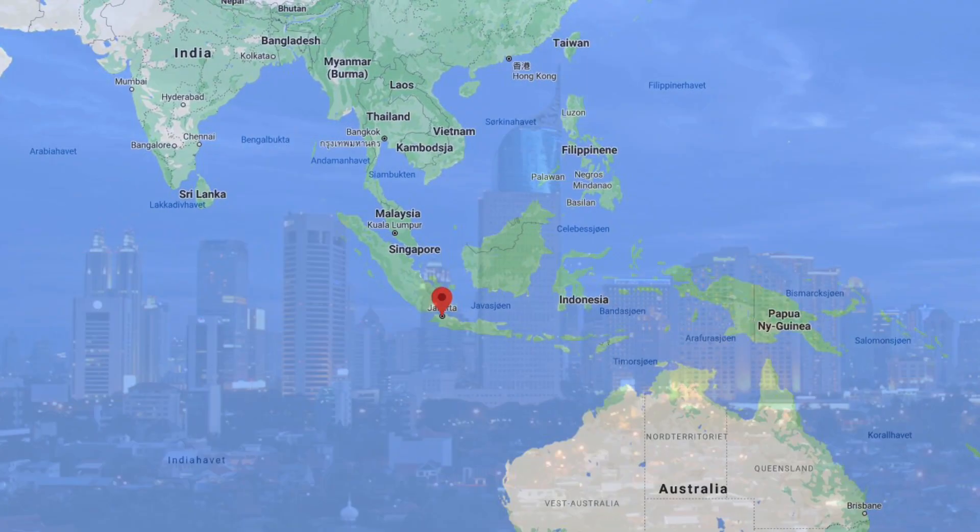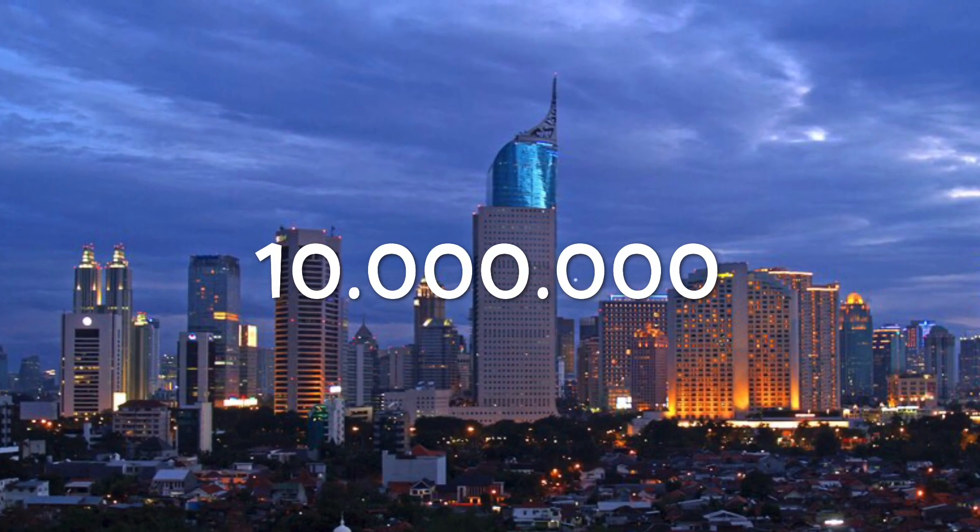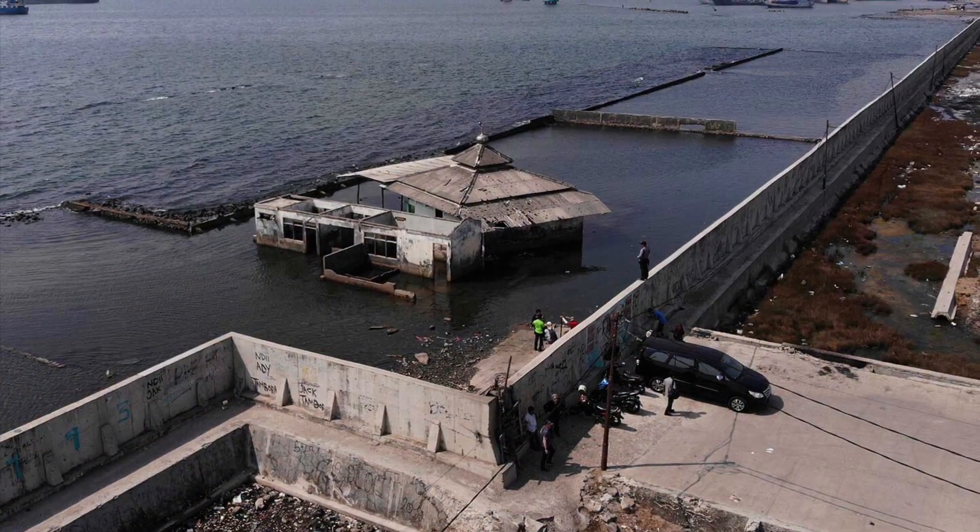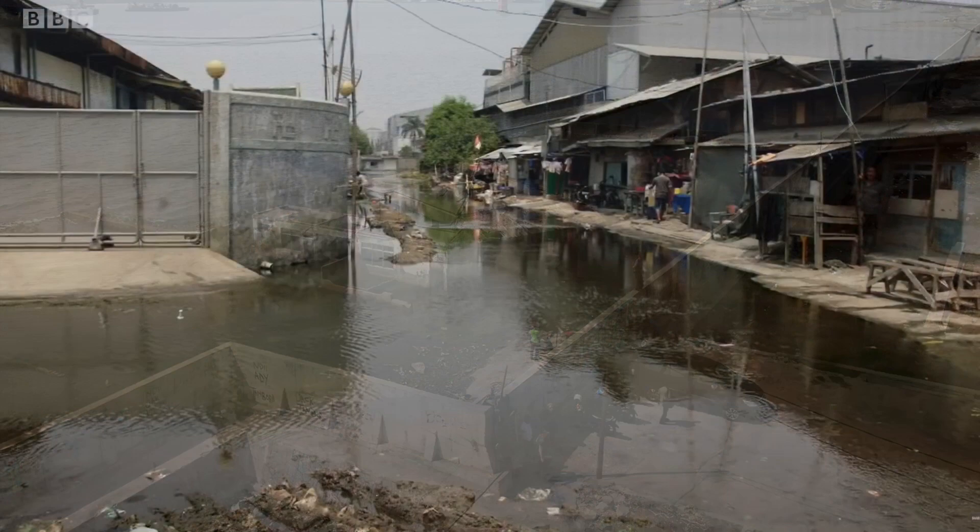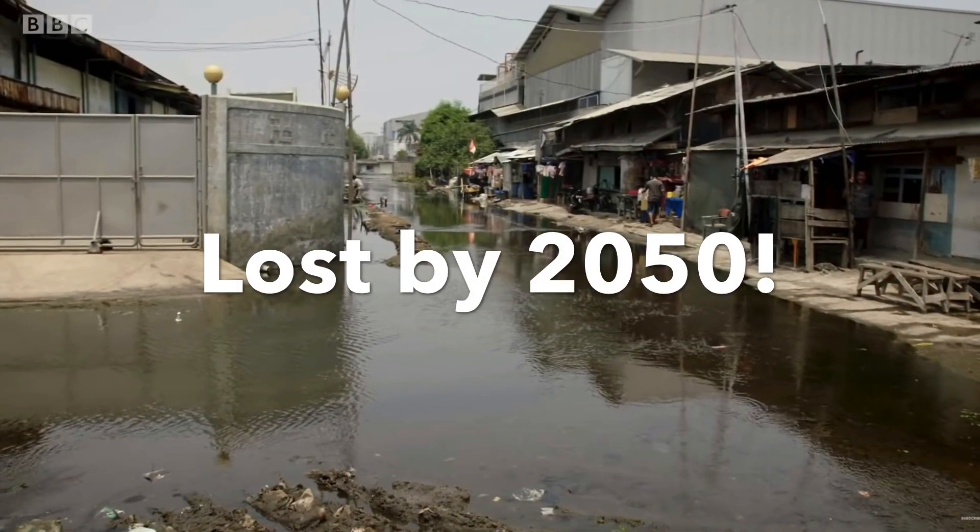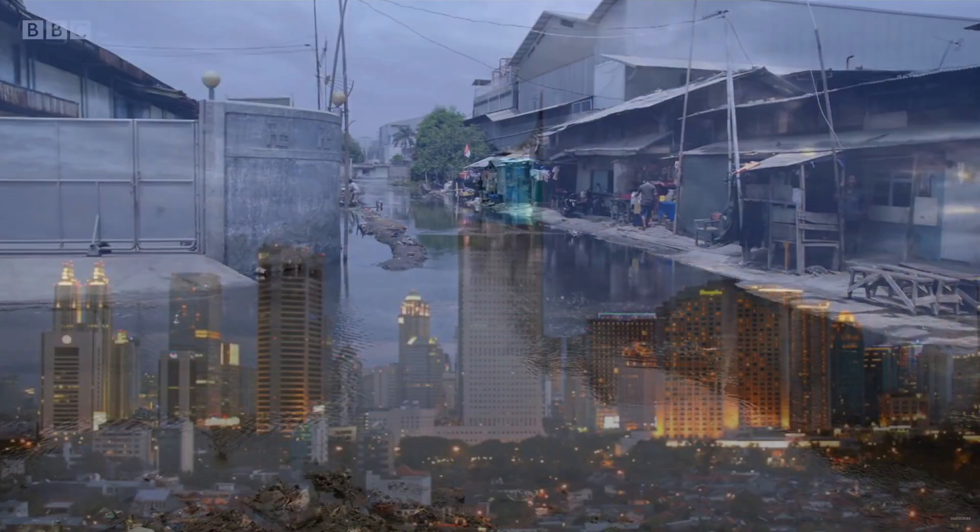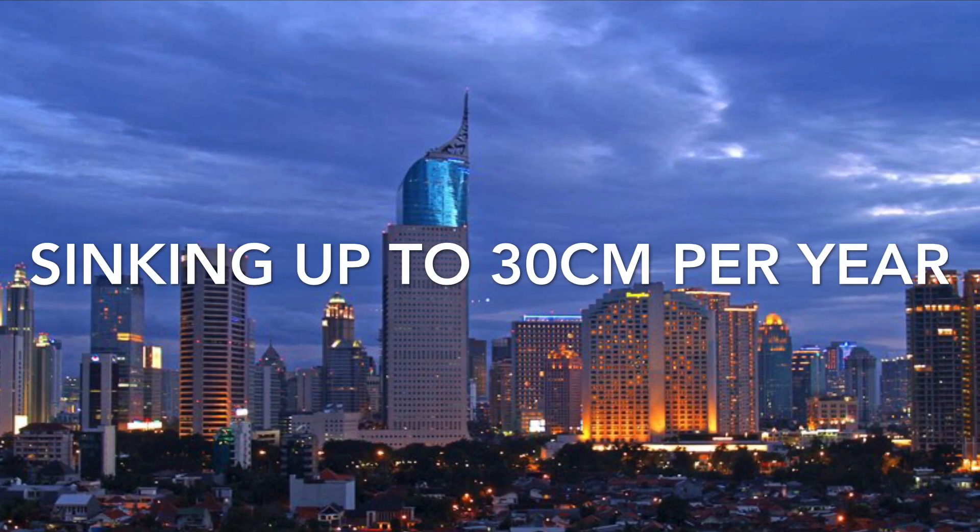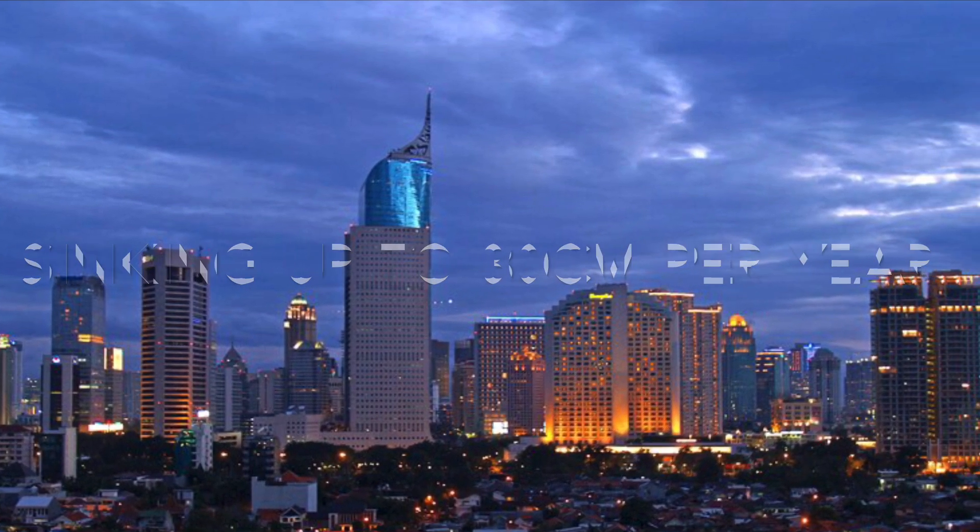Jakarta, the capital of Indonesia and home to more than 10 million people, is sinking. Most of the city may be lost into the sea before 2050. In some areas, the city is sinking up to 30 centimeters per year. But why?